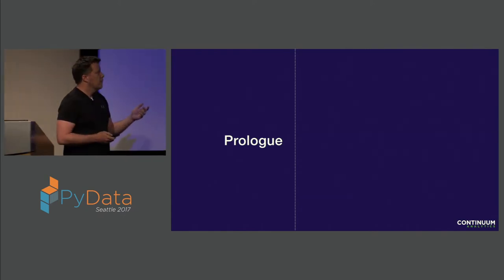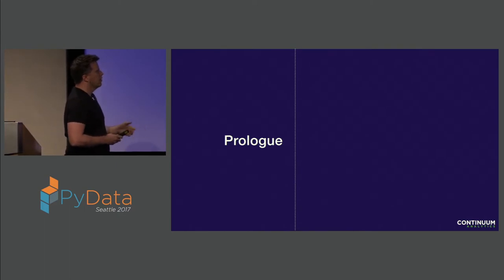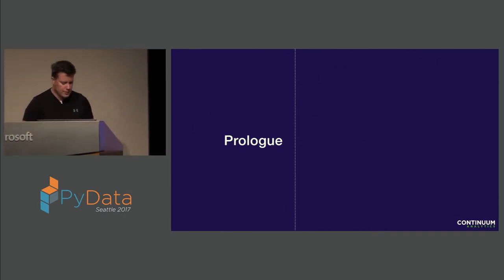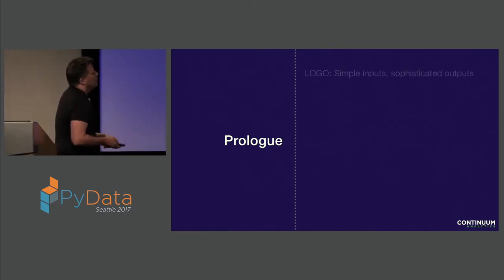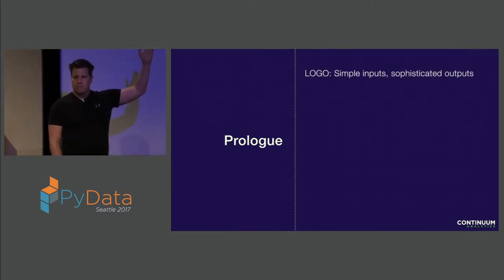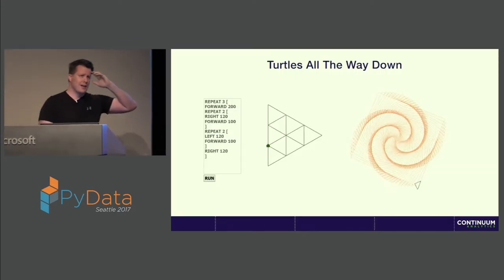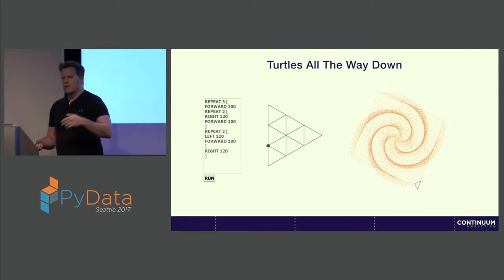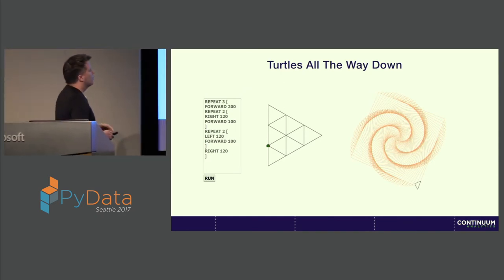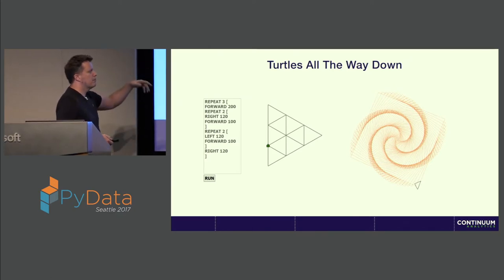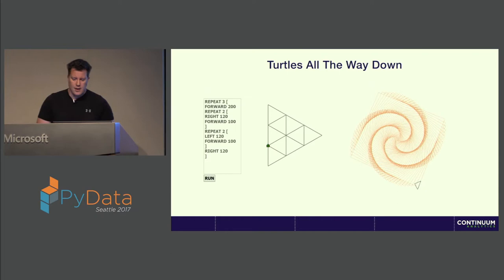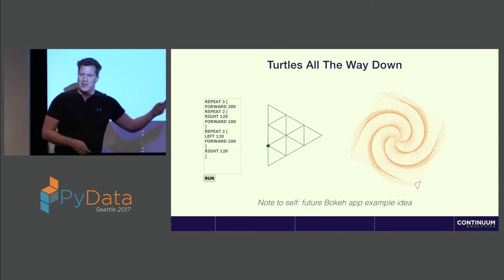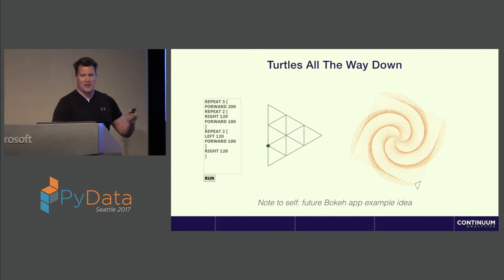So a little prologue. As we're careening towards a 1.0 release, I was waxing a little nostalgic. Who remembers Logo? It was a programming language — very simple — with a little turtle that you could tell to draw: move forward, turn left, rotate, put a pin up, put it down, and draw. What struck me about it was that with very simple commands you could make very complicated output. That was my first introduction to graphics and drawing things. Note to myself: it would be a great Bokeh application to make a Logo interpreter that can draw using Bokeh.